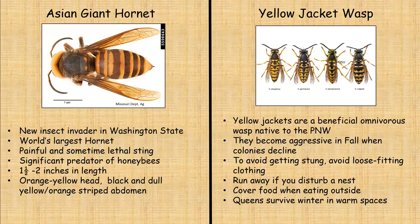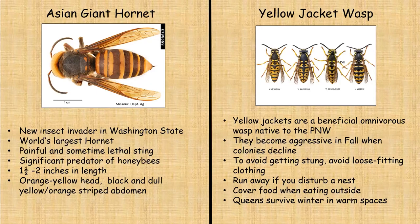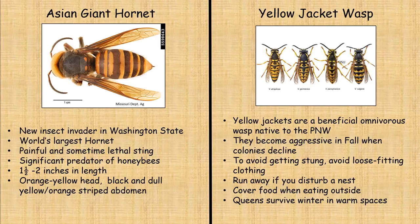So far, the Asian giant hornet — which we heard a lot about several years ago — has only been found in a few areas in Washington State. It is the world's largest hornet. Its sting can be painful and sometimes lethal. They are a significant predator of honeybees, so we definitely do not want them to get a hold in our area. They're really large, about one and a half to two inches in length, with an orangish-yellow head and a black and dull orangish-yellow striped abdomen.